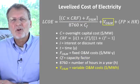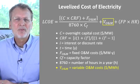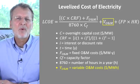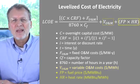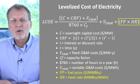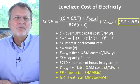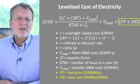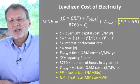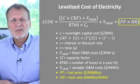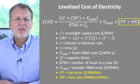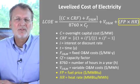The variable costs scale with the energy output of the plant and so also have units of dollars per megawatt hour. That leaves the fuel costs, if there are any. The typical unit for these varies depending on what type of fuel the plant draws.